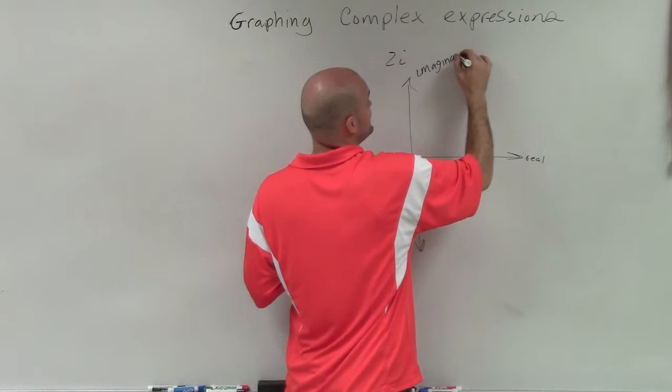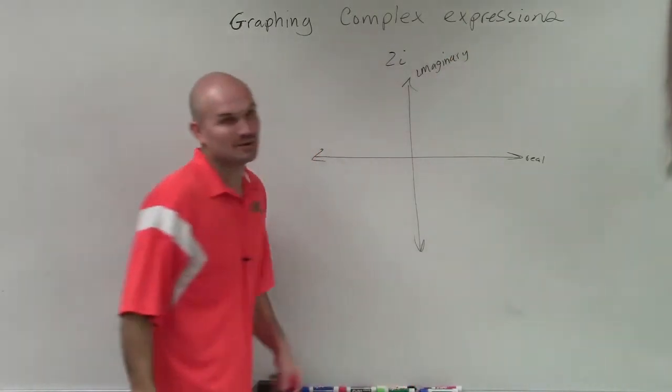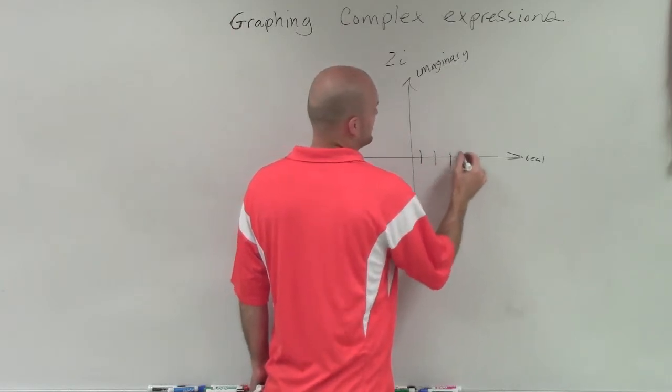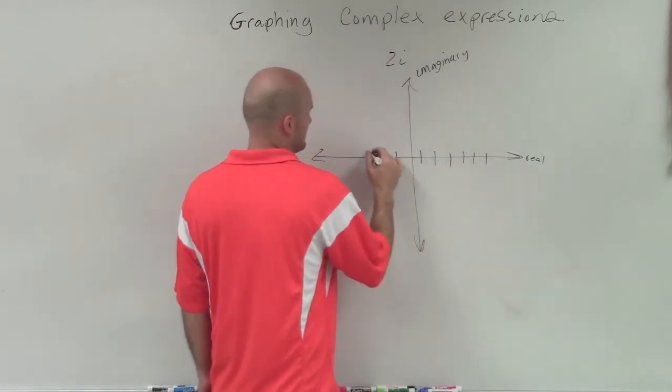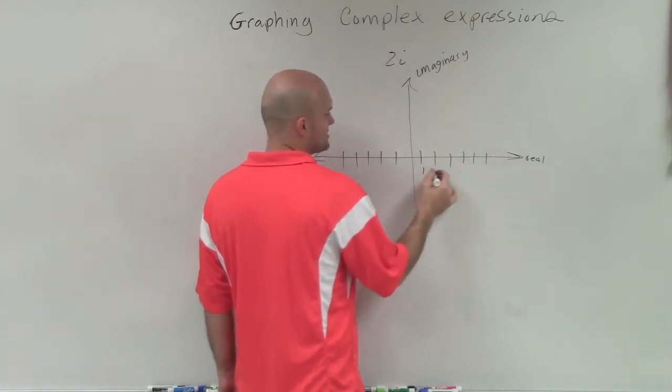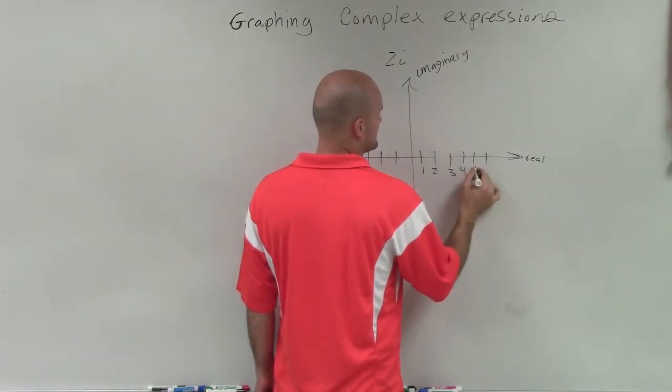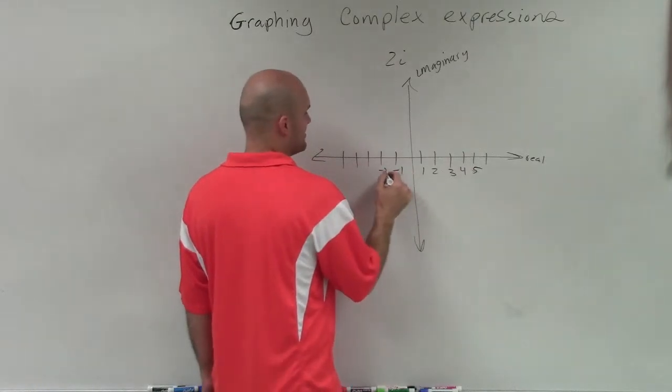And I know you can see it, but that's what we're going to call it. So on the real axis, it's just going to be like any other number line we have, where to the right is going to be positive, and to the left is going to be negative.